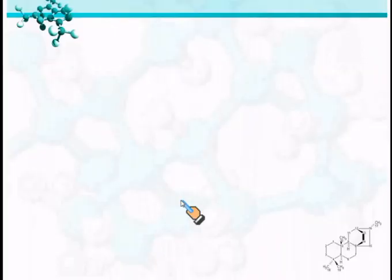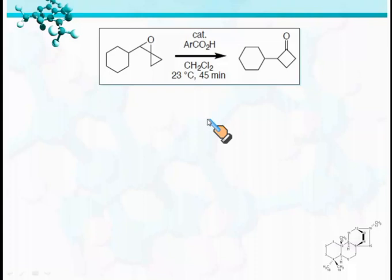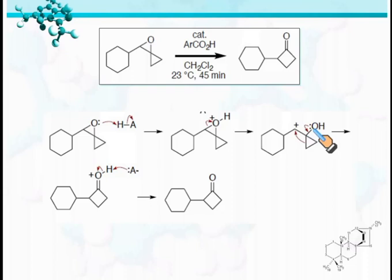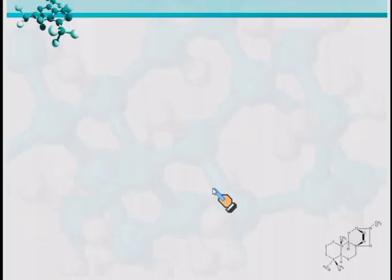The mechanism of this epoxide process is: first the oxygen of the epoxide undergoes protonation, followed by bond breaking to form a carbocation. Then this bond migration takes place to the electron-deficient carbon to form the most stable carbocation, which is stabilized by resonance. These are the resonating forms, then loss of a proton generates this carbonyl compound.